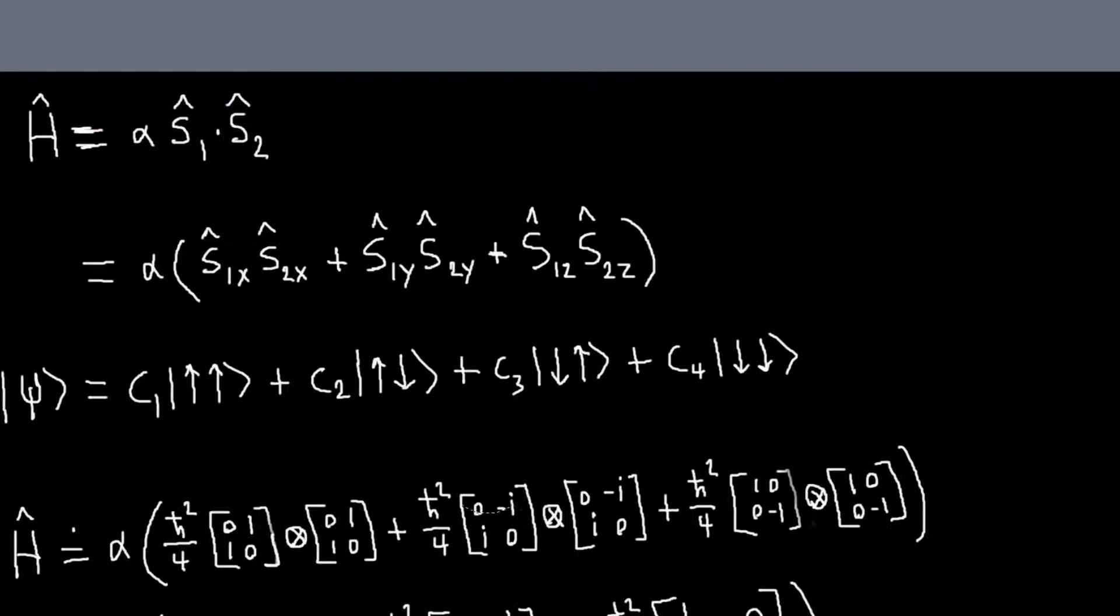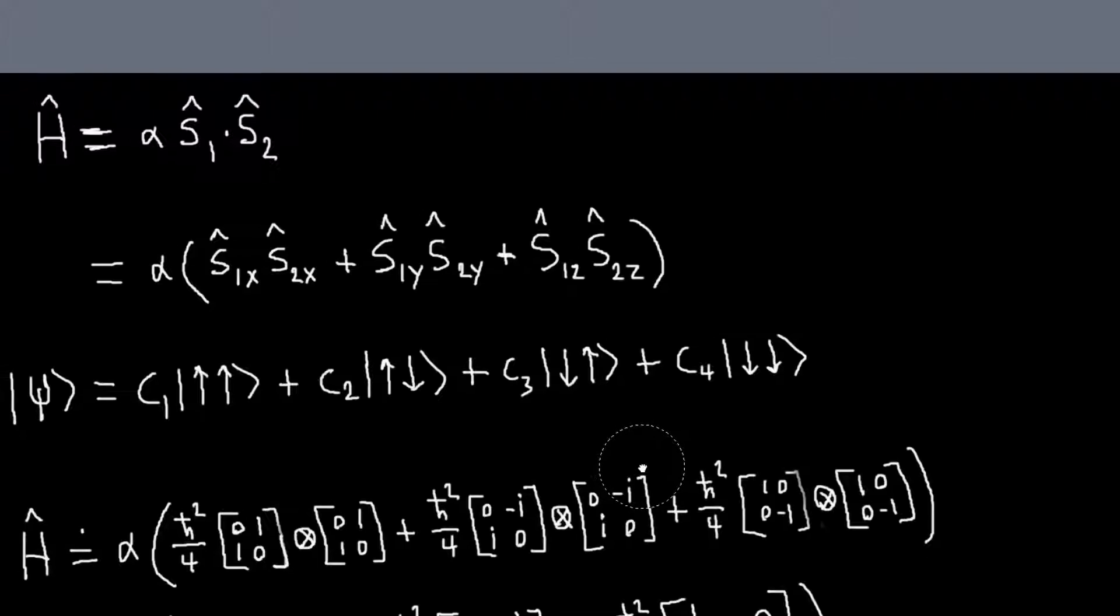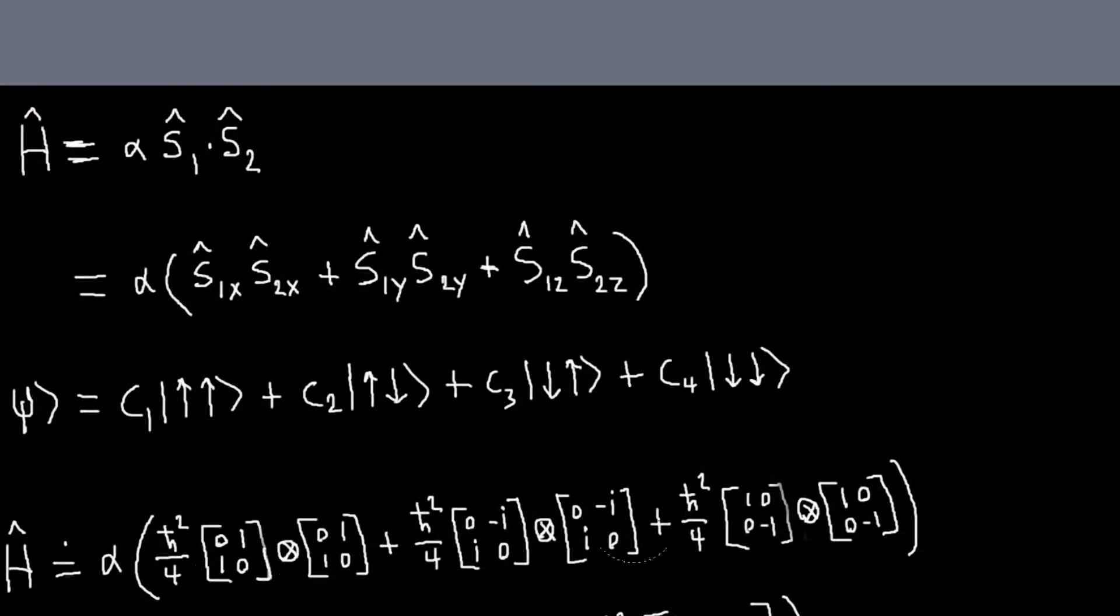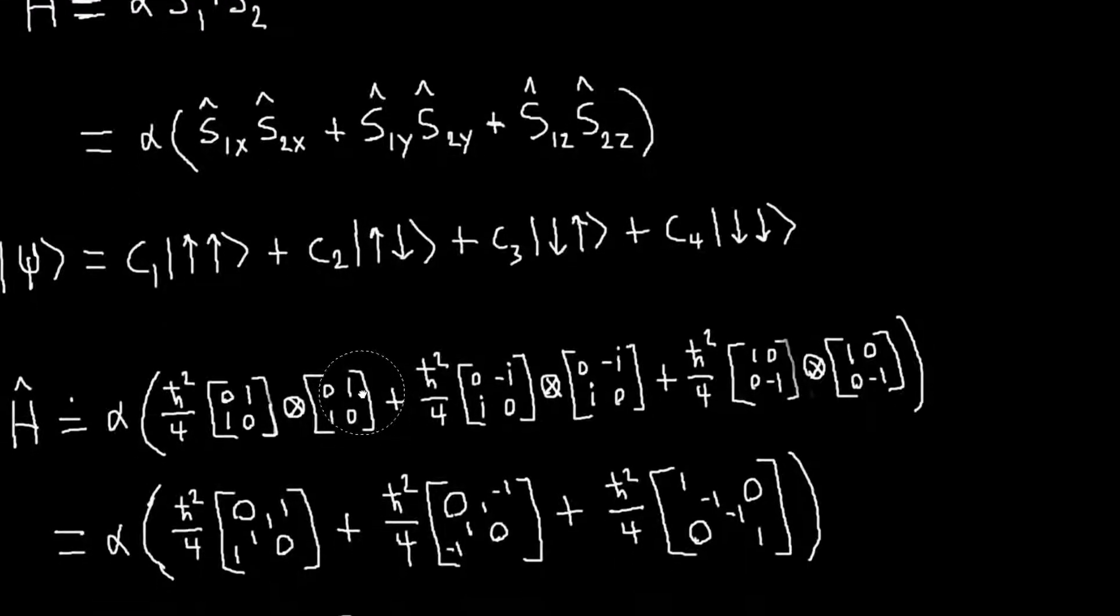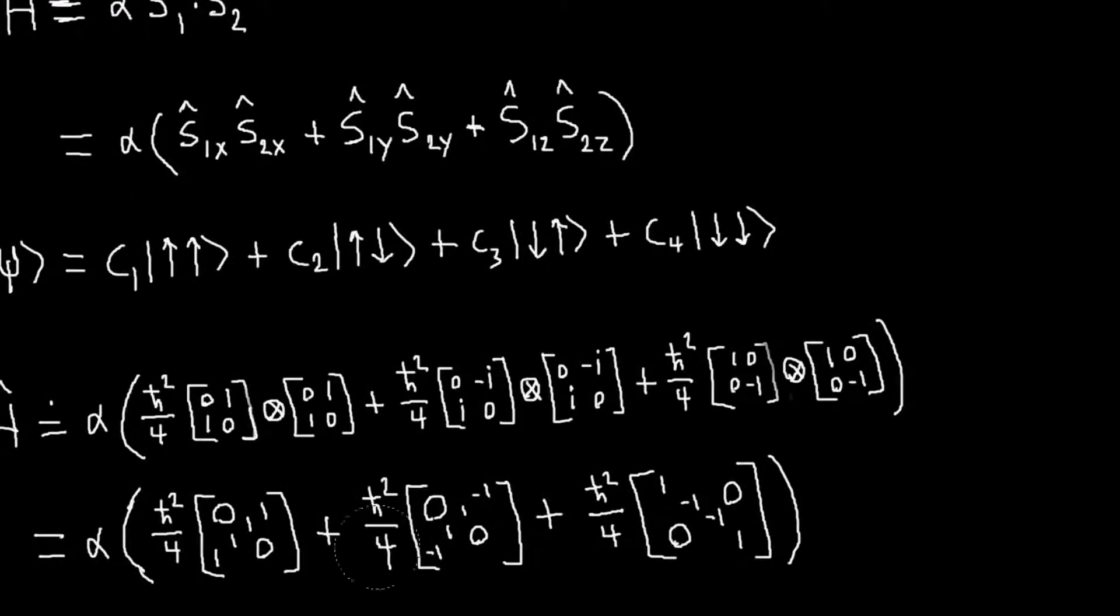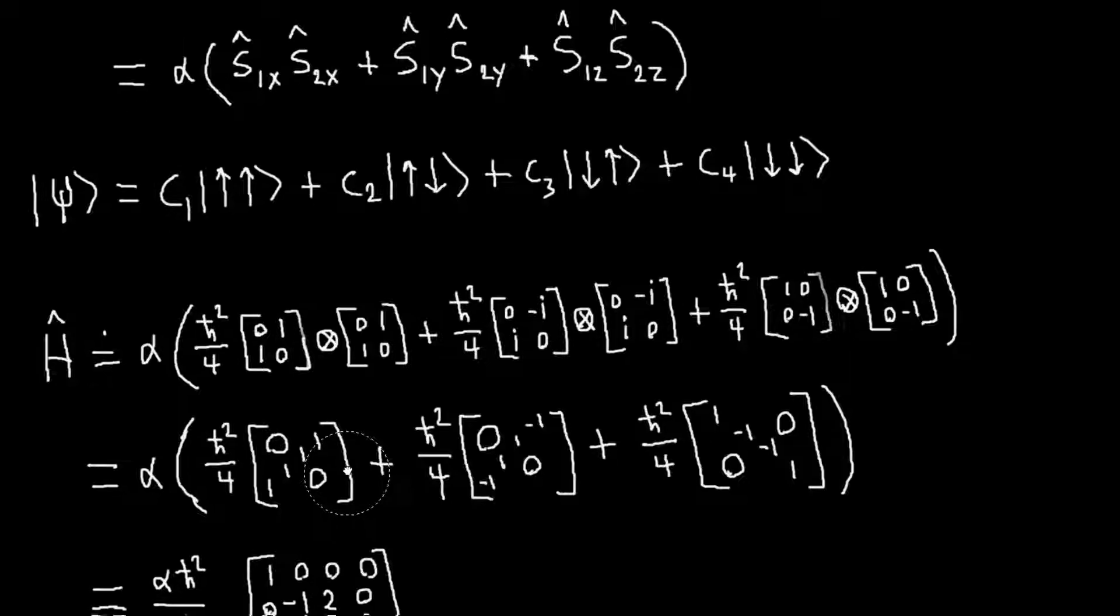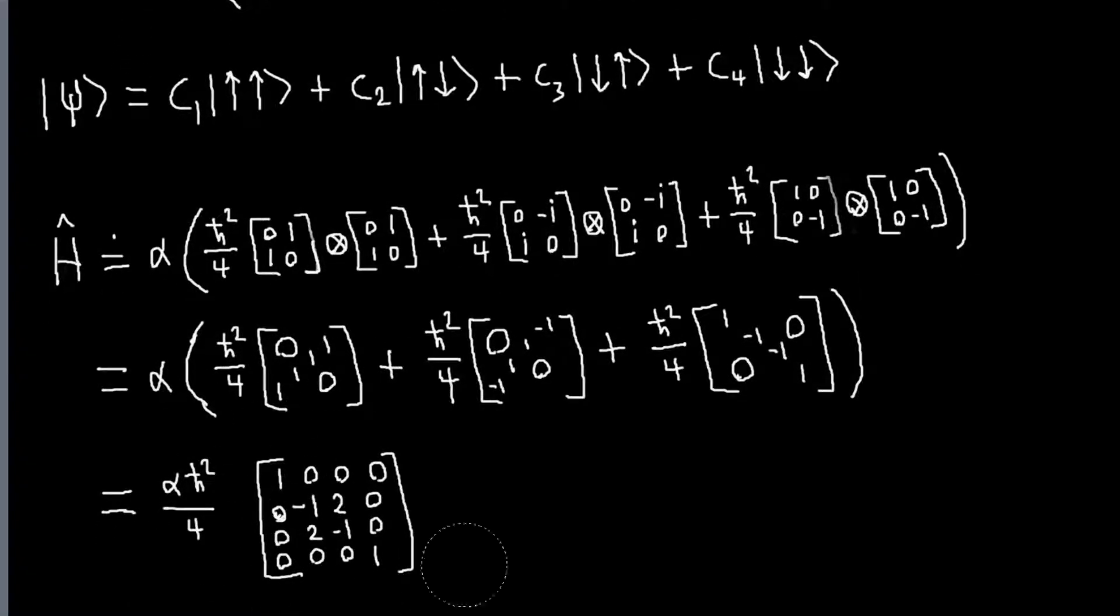You can go to a Kronecker product calculator online and plug in each of these products. And what you will find are these. This is an easy sum to do, so we just need to sum all these together.